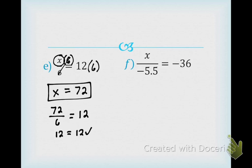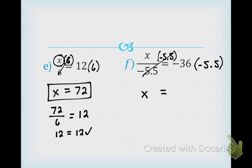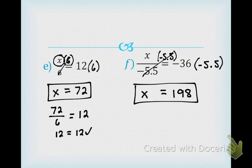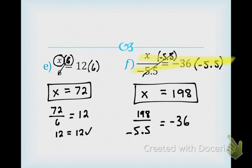Next one, I want you to try on your own. What is not allowing my variable to be alone? Divide by negative 5.5. How do I get rid of divide by negative 5.5? You multiply by negative 5.5 because that is the opposite. What you do to one side, you must do to the other — we know this cancels out, and x equals 198. To check: 198 divided by negative 5.5 equals negative 36. It is true — it does equal negative 36, so it checks out.